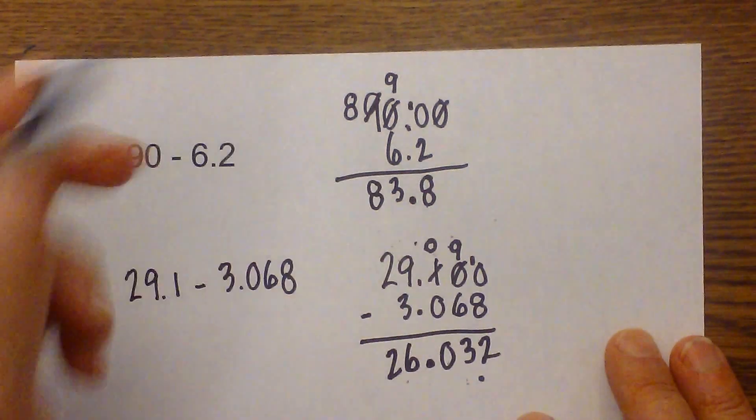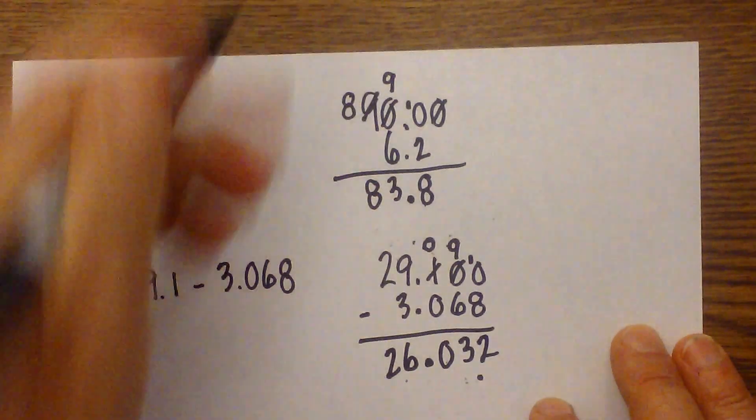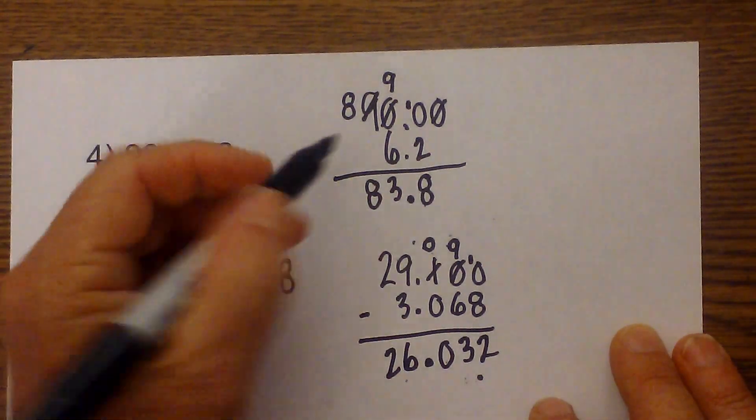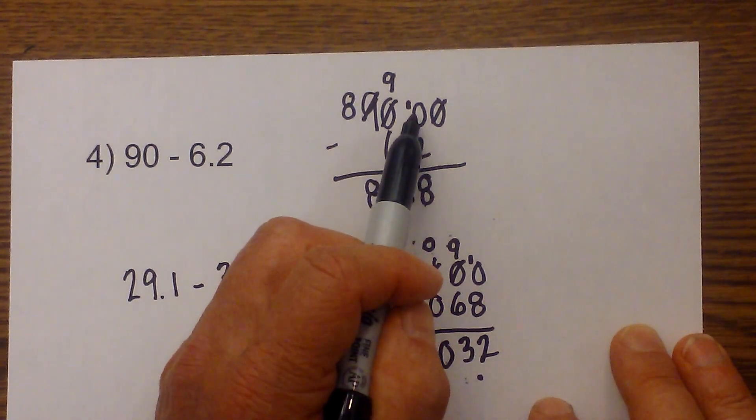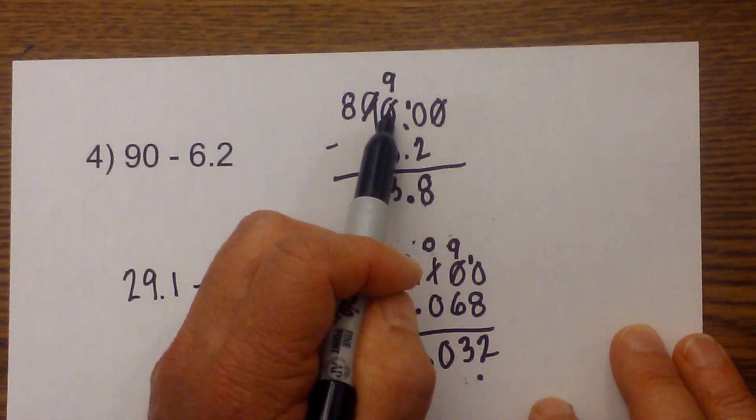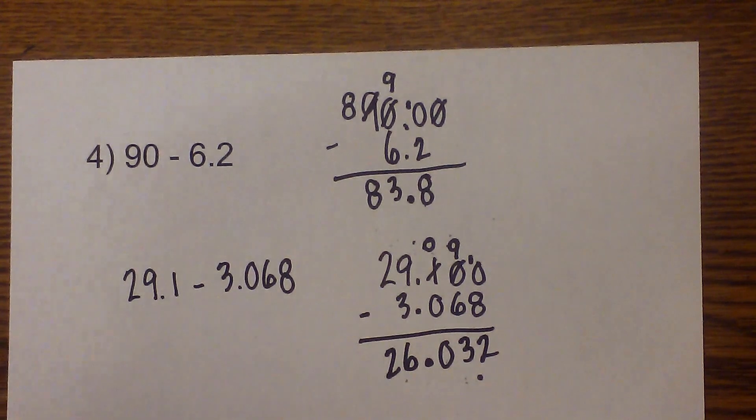In summary, remember always line up the decimals, then you just subtract normally. Remember, you cannot borrow one from another zero, you have to move down the line. Hope that helps with adding and subtracting decimals. Moo Moo Math uploads a new math video every day. Thanks for watching.